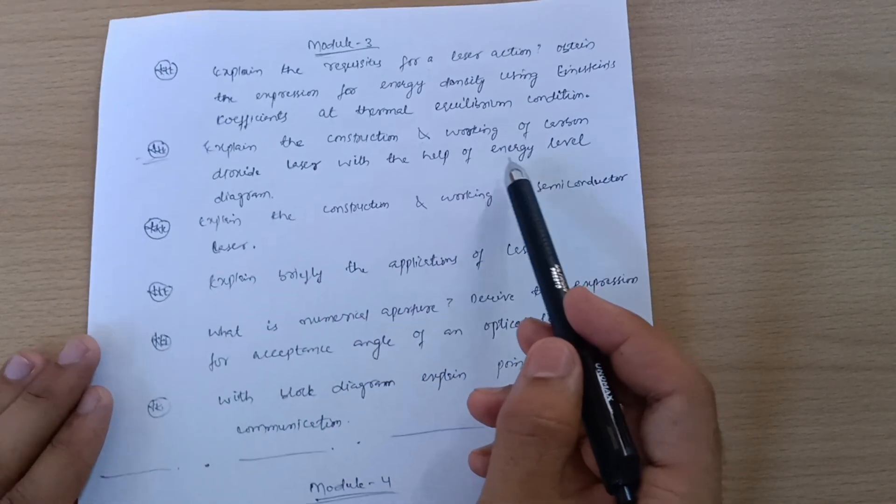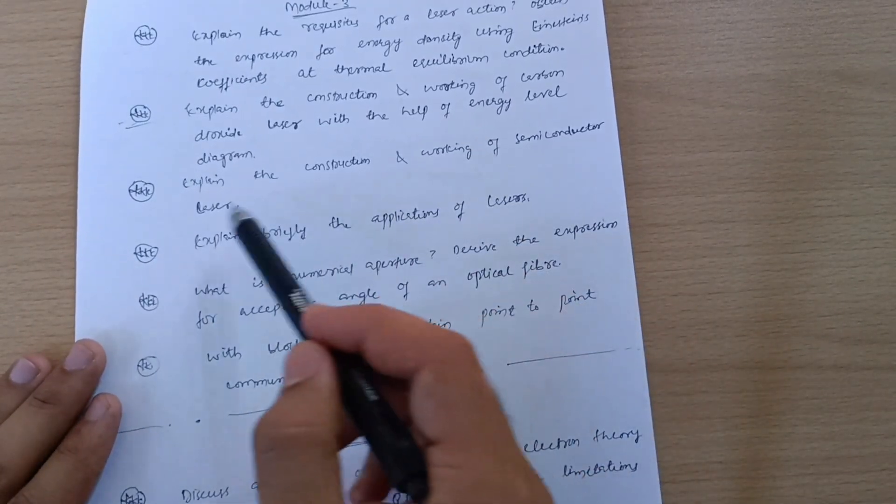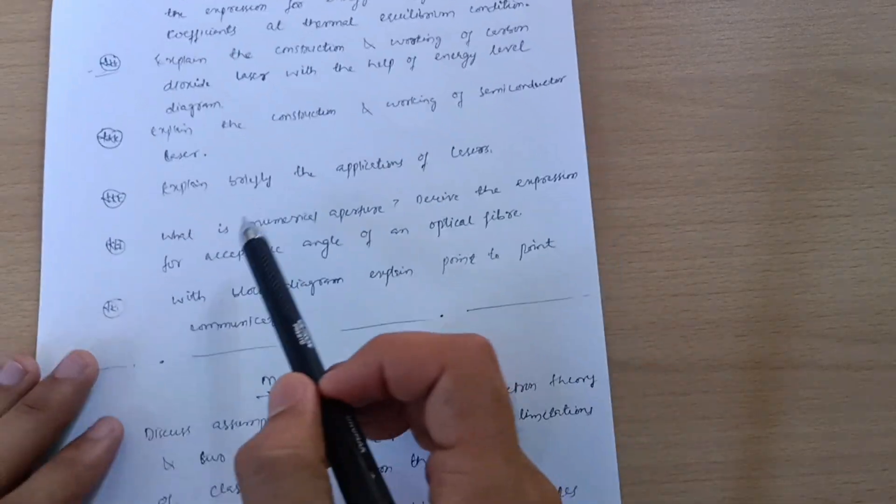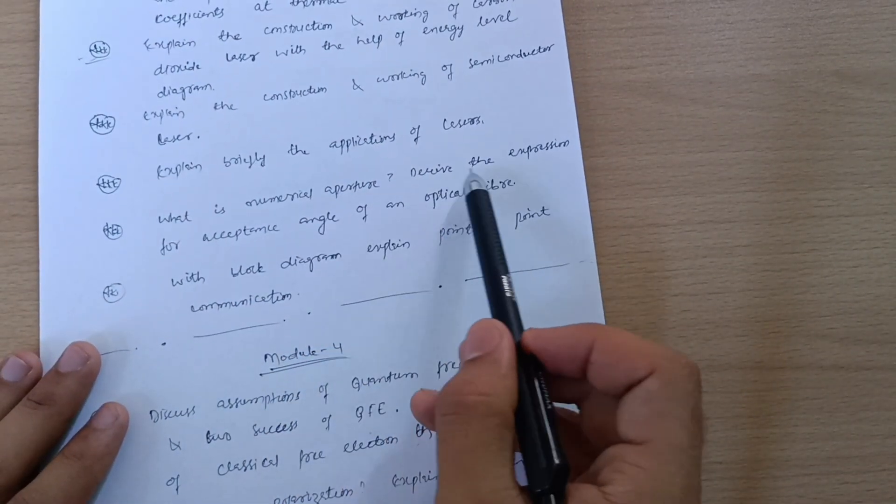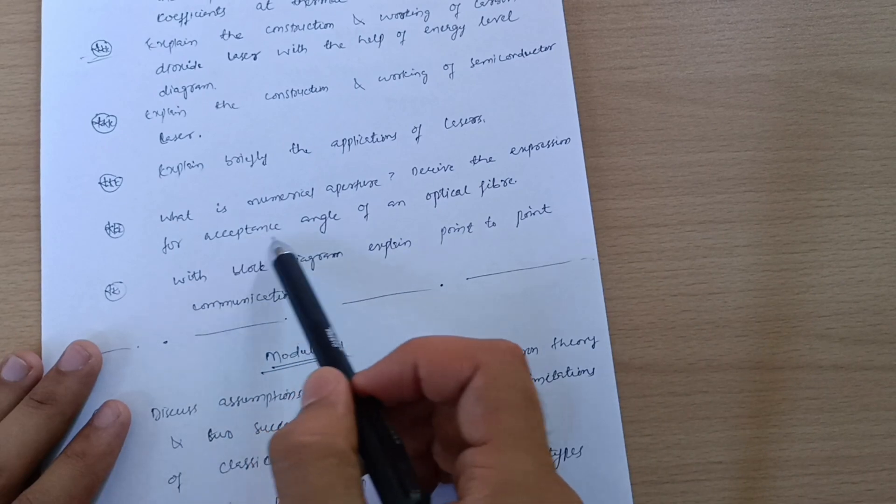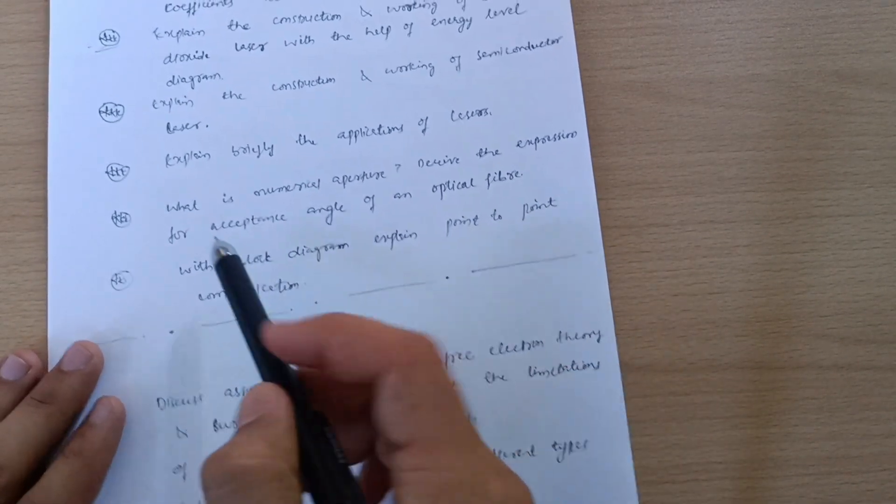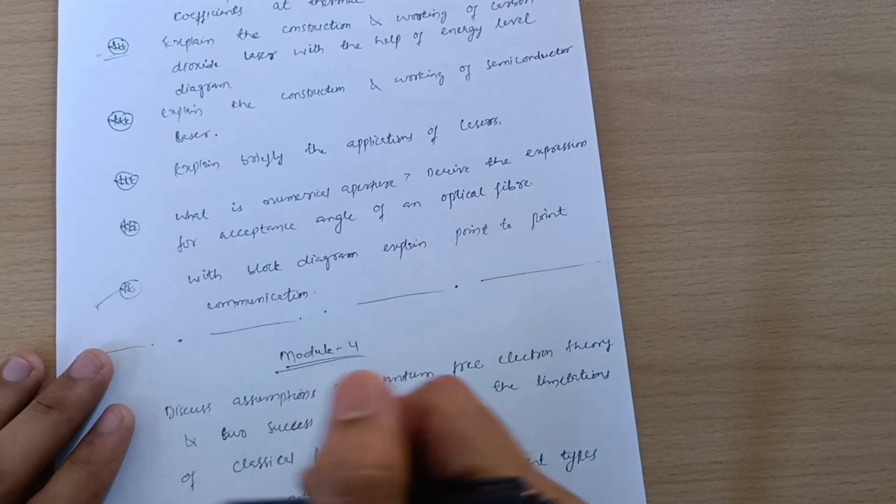Explain the construction and working of semiconductor laser. Explain briefly the applications of lasers. What is numerical aperture? Derive the expression for acceptance angle of an optical fiber. With block diagram, explain point-to-point communication. These six questions are enough to cover Module 3.